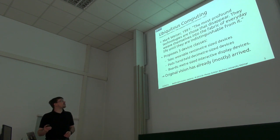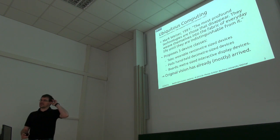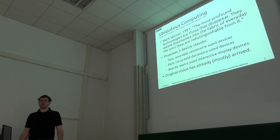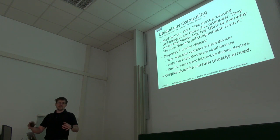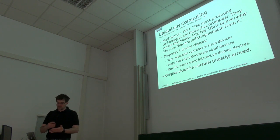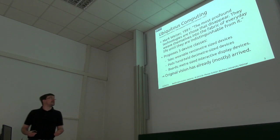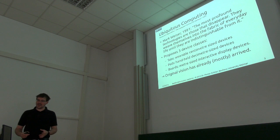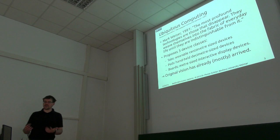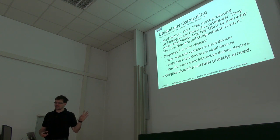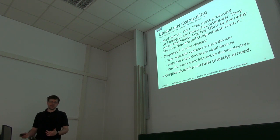Now about ubiquitous computing: the original term is actually pretty old, from 1991, from Mark Weiser. The basic idea is that computing power disappears into your everyday environment — you don't have a dedicated computer anymore, but there's computing power built into so many things that you can use it whenever you like. The central idea was three classes of devices: tabs, pads, and boards. A board would be like an interactive whiteboard, a pad roughly like an iPad, and a tab something smaller like a very small smartphone. If you look at what you can buy in every store today, this vision has basically arrived.